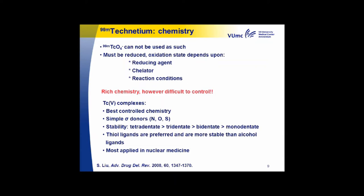Technetium(V) complexes are mostly formed and have the best controlled chemistry. Technetium(V) complexes mostly use simple signal donors like nitrogen, oxygen, and sulfur. As was mentioned, the tetradentate ligand is more stable than four monodentate ligands, and thiol ligands are preferred — four thiol donors are more stable than alcohol ligands.